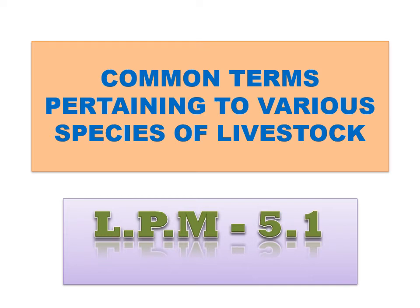Welcome dear students to the subject LPM 5.1. Today's topic is common terms pertaining to various species of livestock. Just as humans are called different names according to age - young one, adult, old - the same happens in animals. For example, in cattle, according to their age, they are called calf, heifer, bull, or cow.